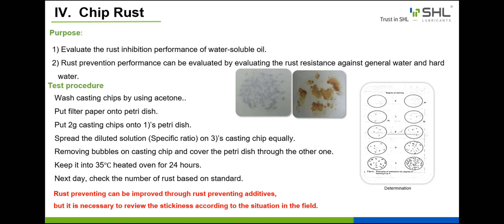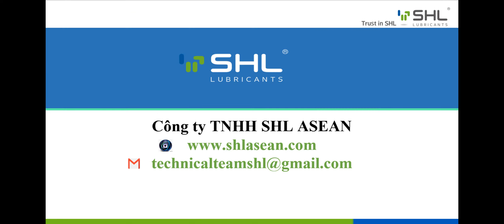Next, we learn about the test method of chip rust. The purpose of this method is to evaluate the rust inhibition performance of water-soluble oil. Rust prevention performance can be evaluated by testing the rust resistance against general water and hard water. Rust prevention can be improved through rust-preventing additives, but it is necessary to review the stickiness according to the situation in the field. Above is the content of some typical testing methods for lubricant. Thank you everyone for listening attentively. If you have any questions or concerns, you can contact the technical support team via email. Goodbye and see you again.